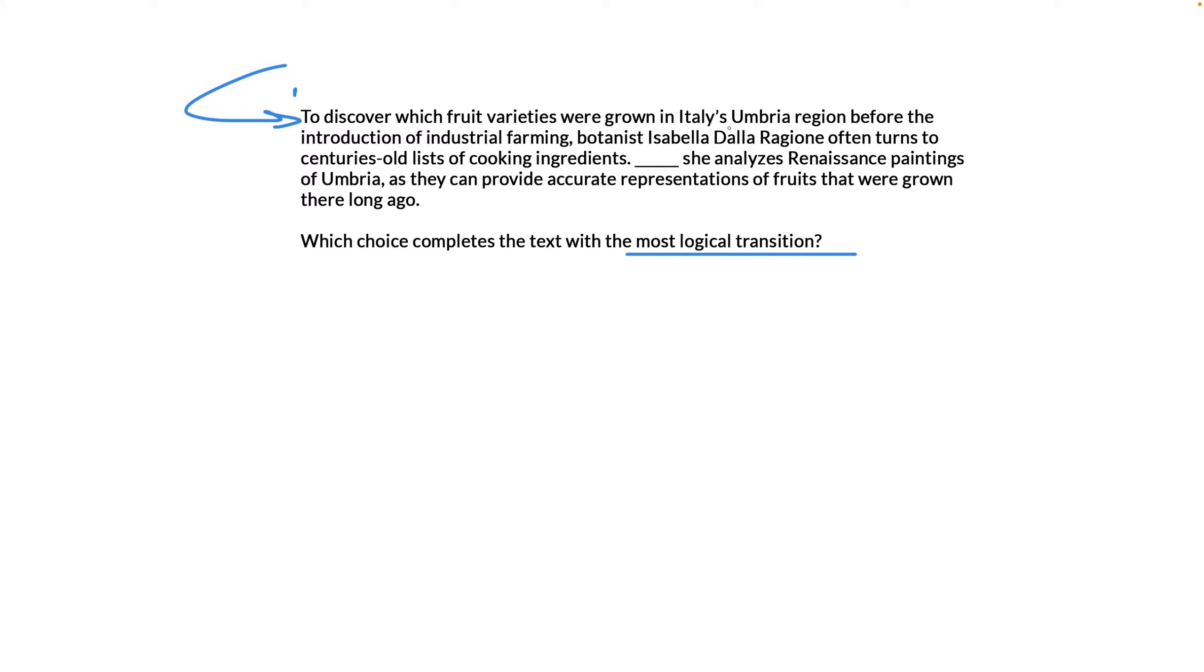Sentence one, we've got this Italian botanist, right? She looks at old recipes to figure out what kind of fruits they used to grow in Umbria. Sentence two, she looks at Renaissance paintings from the region to see which fruits were local during that period of history.